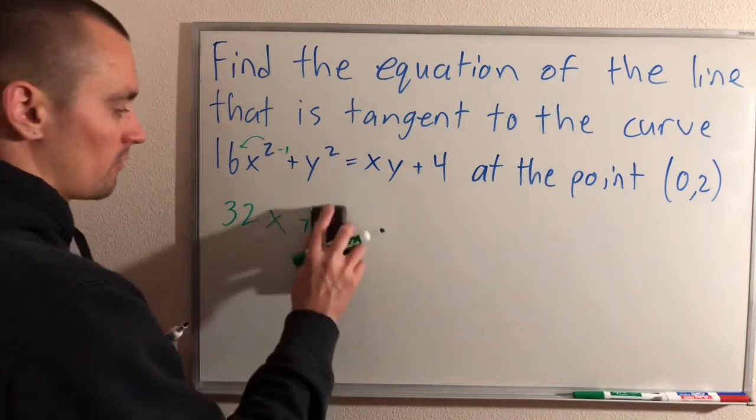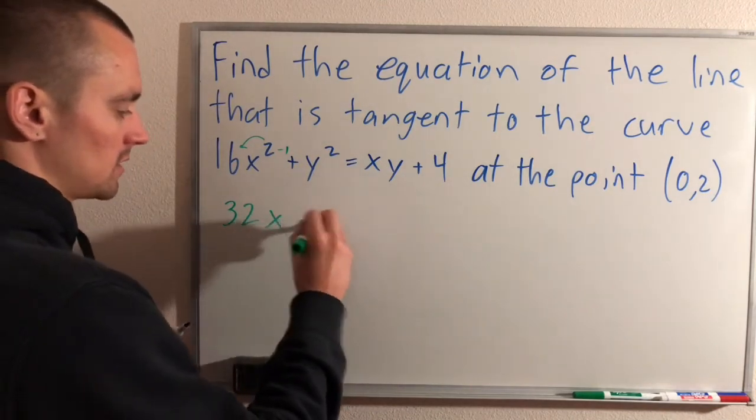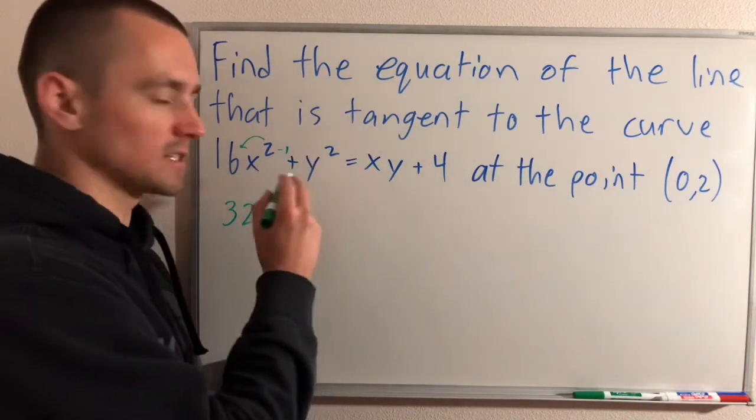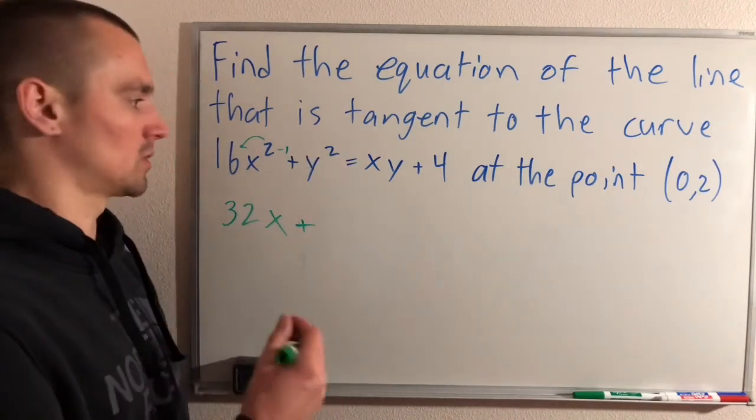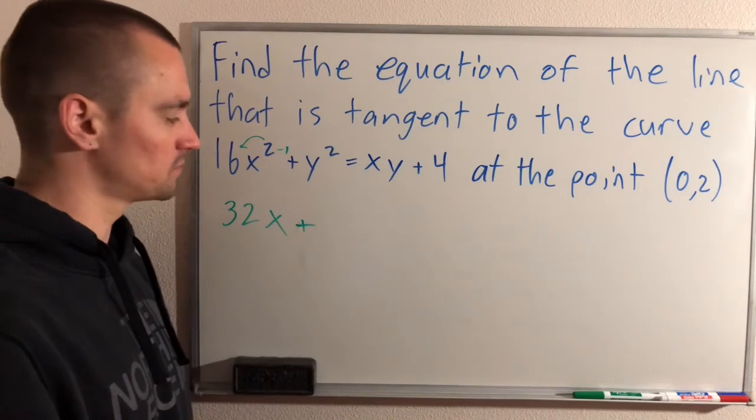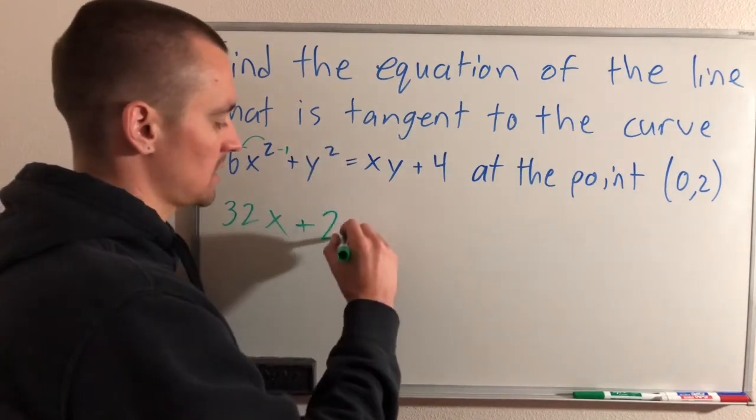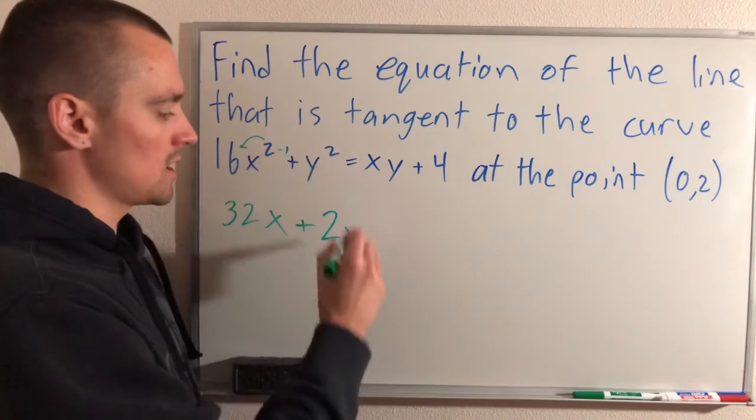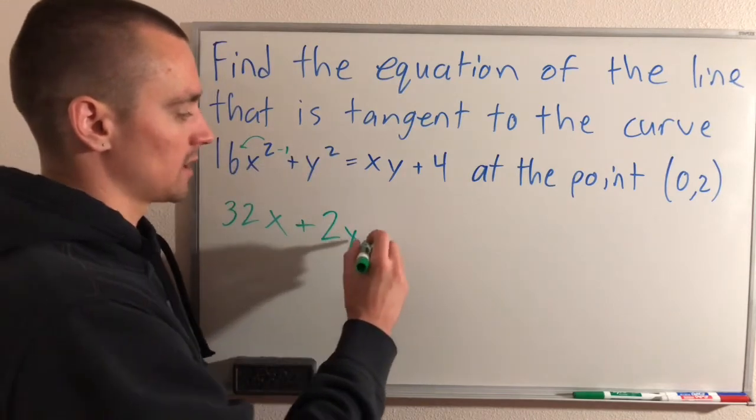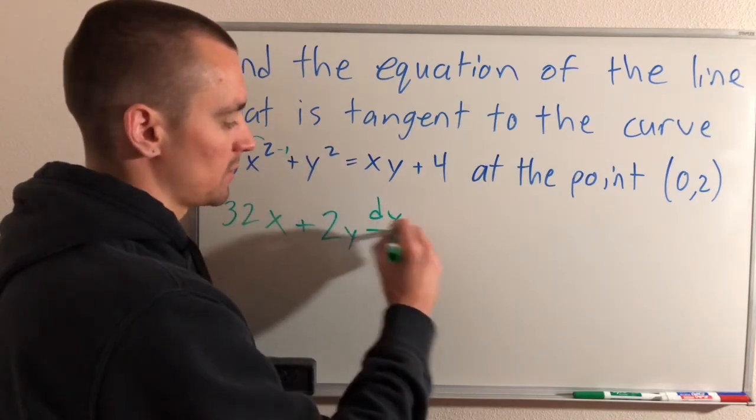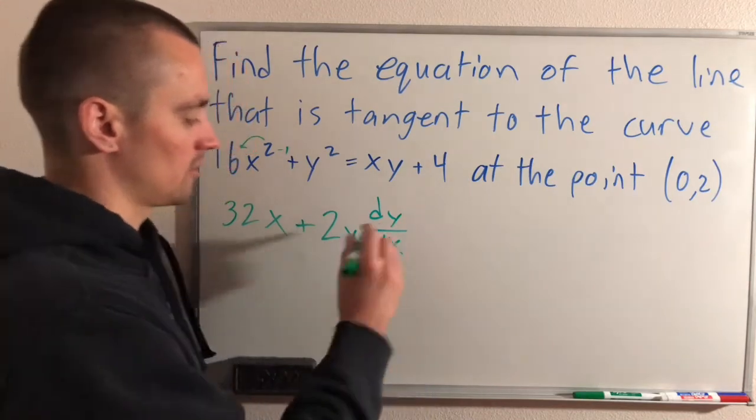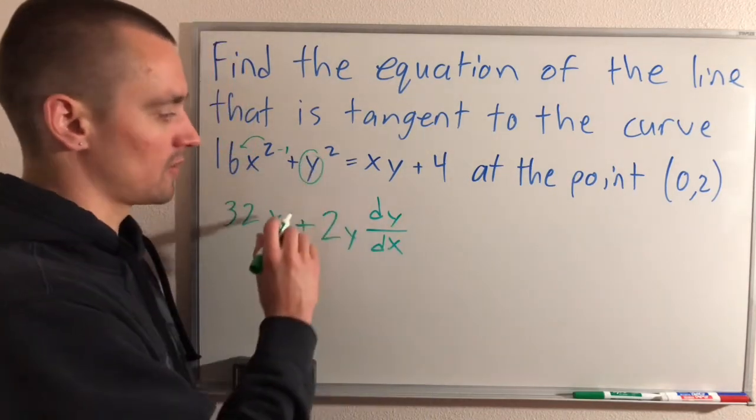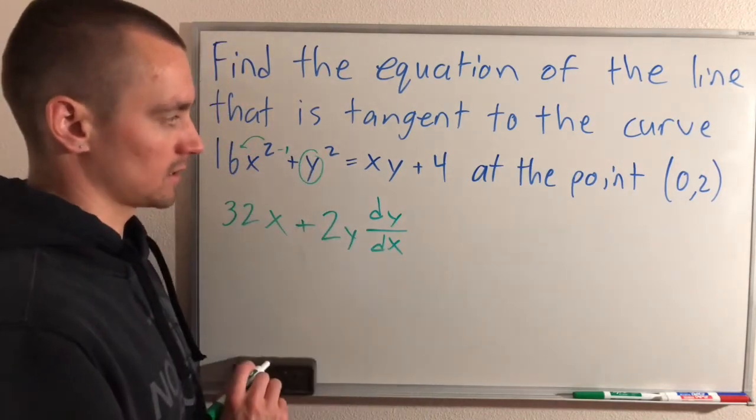Then for the derivative of y², we're going to need to use the chain rule because y has to be treated as a function of x because we're taking the derivative with respect to x. So doing that, the derivative of the outside will just be power rule, leave the inside alone, so the y is not going to change. And then we're going to multiply that by the derivative of the inside. The derivative of y, which is our inside function, is just dy/dx.